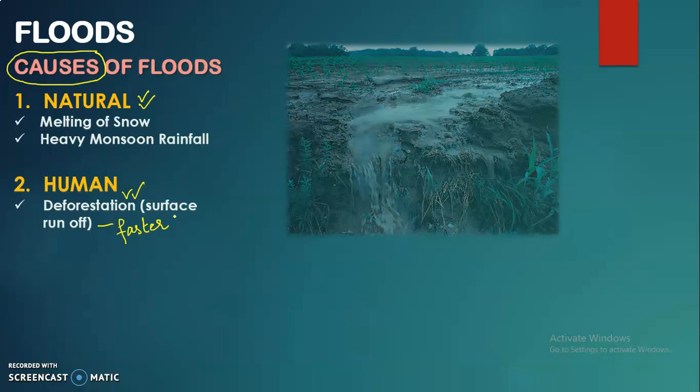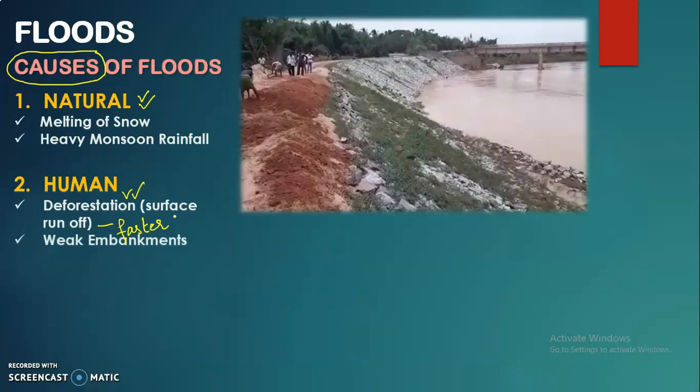Another human factor is weak embankments. Embankments are the surrounding areas of rivers through which water flows. When you have a weak embankment, those areas get eroded by the river and water comes onto the surface. If humans don't create strong embankments, it creates conditions for flooding in that area.